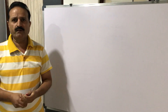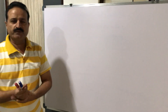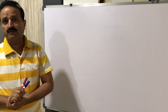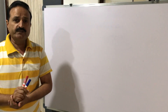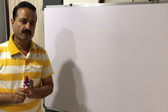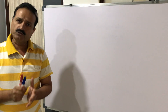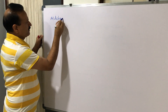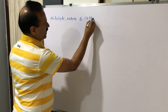Hi friends, good morning. Myself A.G. Sir from Sambir Schools. Today I am going to teach a new chapter. The name of the chapter is Aldehyde, Ketone, and Carboxylic Acid — what they are and how we can form compounds containing a Carboxy or Carbonyl functional group.